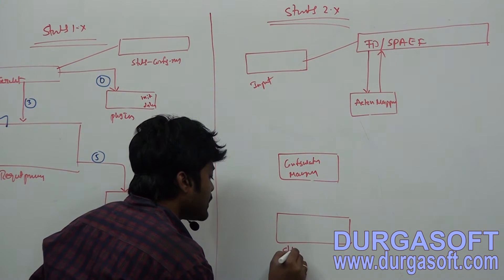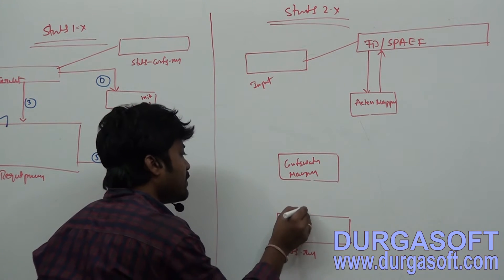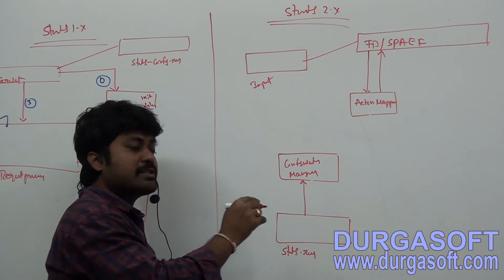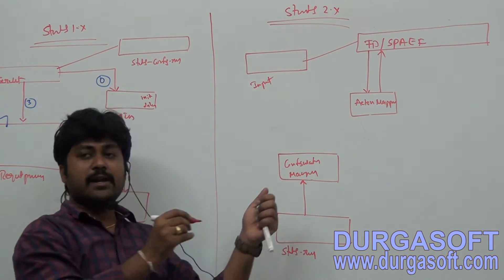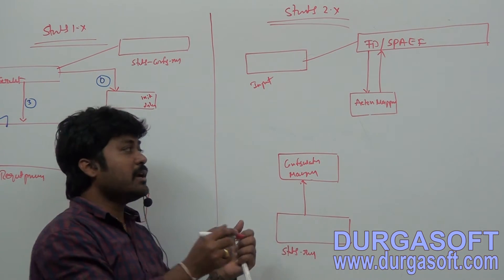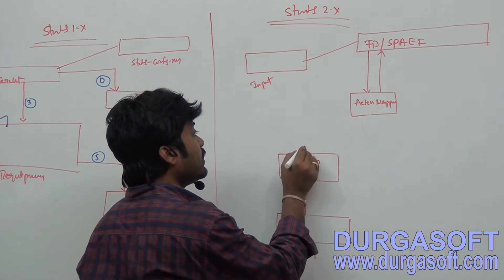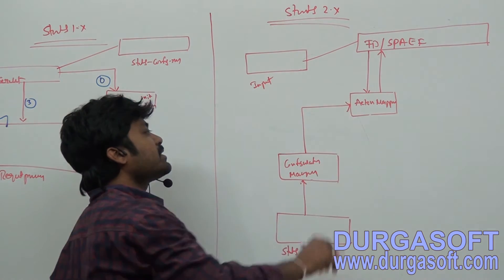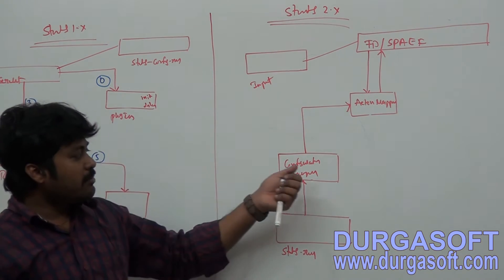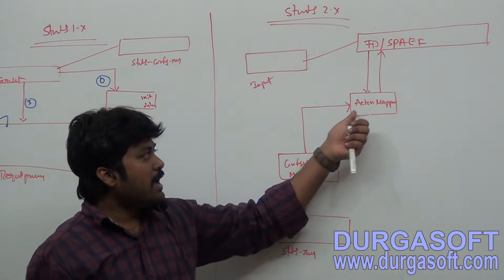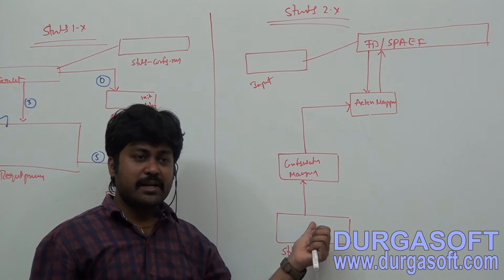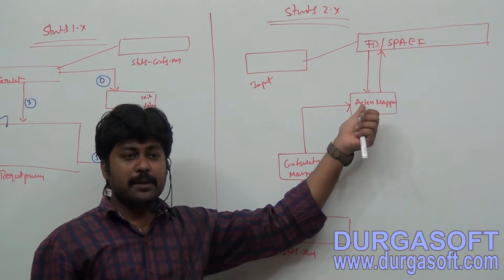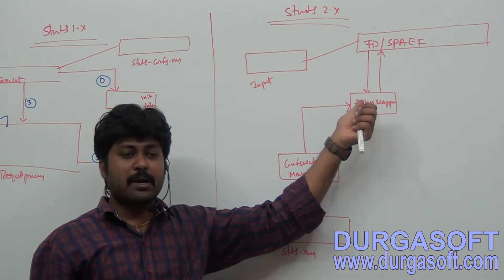Using ConfigurationManager, it will read your struts.xml file data. We have to create a struts.xml file and configure all the mapping configurations in it. ConfigurationManager reads those mappings and forwards the data to ActionMapper.